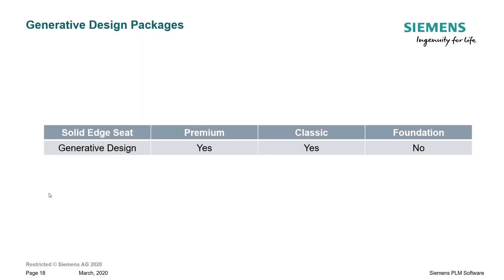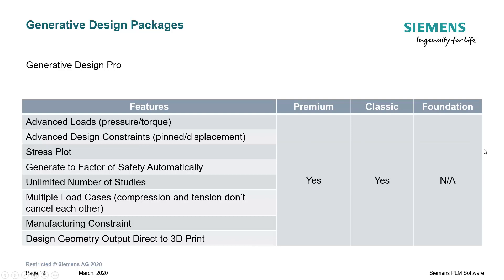The basic generative design package is available in both Premium and Classic Solid Edge seats, but not Foundation. This chart shows some differences between the Generative Design standard package and Generative Design Pro. Pro features include advanced loads, advanced design constraints, stress plots, unlimited studies, and multiple load cases — meaning compression and tension don't necessarily cancel each other out. It also supports the manufacturing constraint dialogue you saw, and design geometry can be output directly for 3D printing or editing.